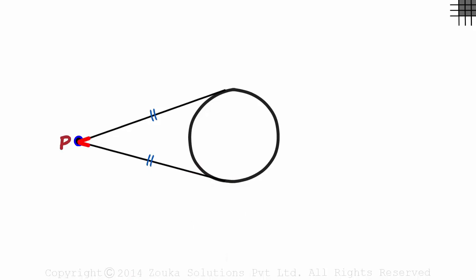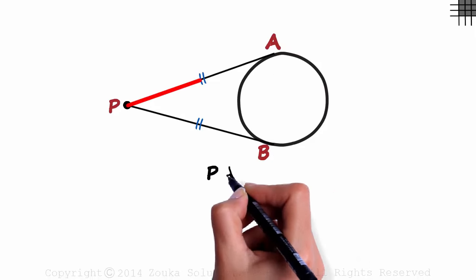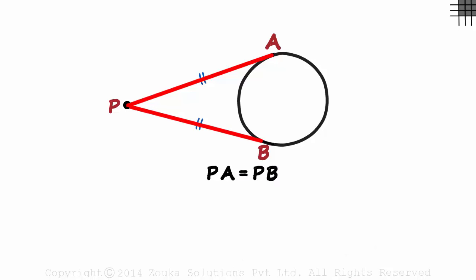Tangents drawn from an external point to a circle will be equal in length. If the two points at which the tangents meet the circle are called A and B, then we can be sure that PA will be equal to PB in length.